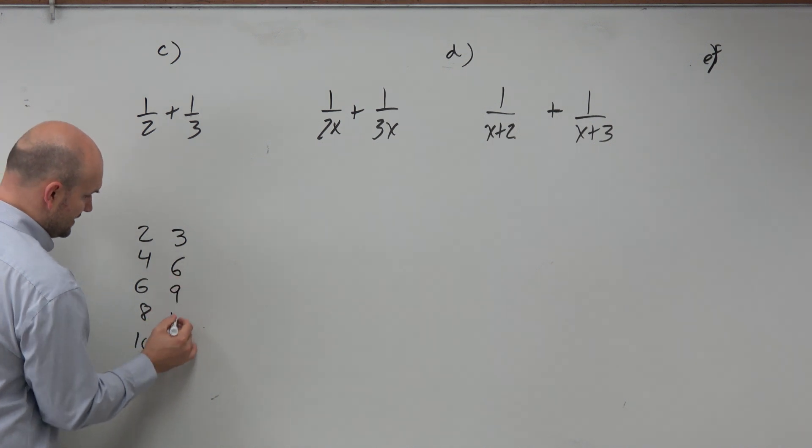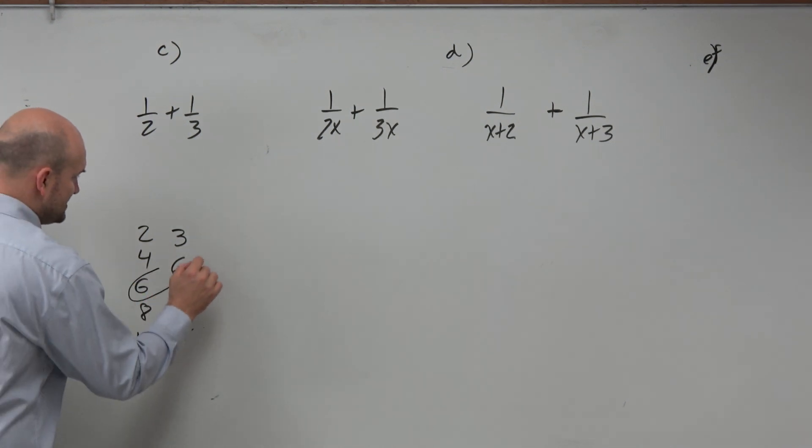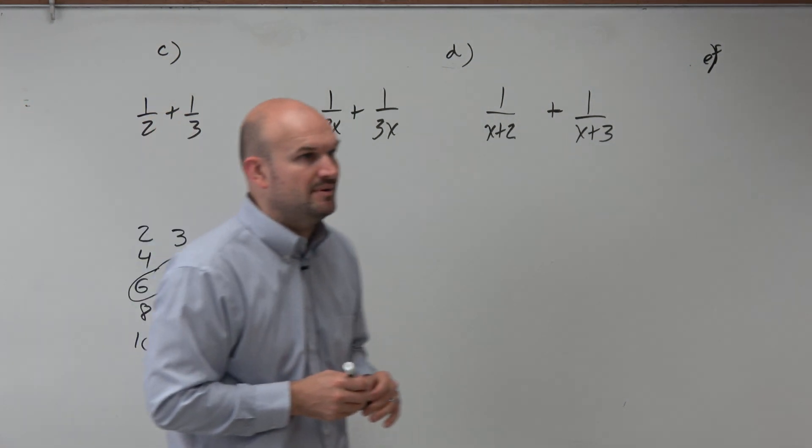And then back in the day, we found the multiple. And you're like, oh, they both share a 6. That's the smallest number, the least common multiple.